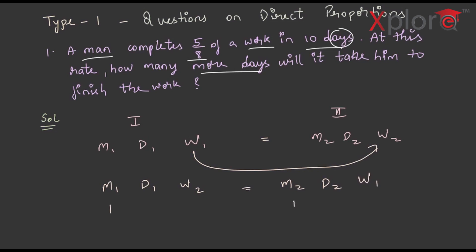As number of men in both the cases are 1 and in the first statement the number of days is 10 and we have to find out, let us name it as x and the amount of work done in the first statement is 5/8 and what will be W2? The whole minus 5/8, that is 3/8. Therefore, 1 into 10 into 3/8 is equal to 5x/8, that is 30/8 into 8/5 is equal to x and you will be getting x is equal to 6. This is how we get the solution using this formula.